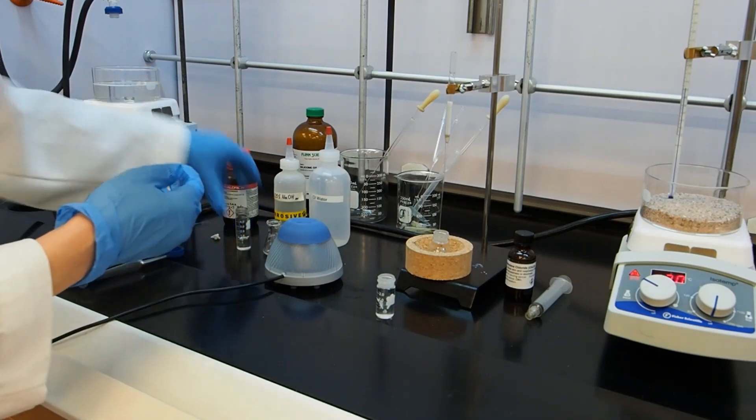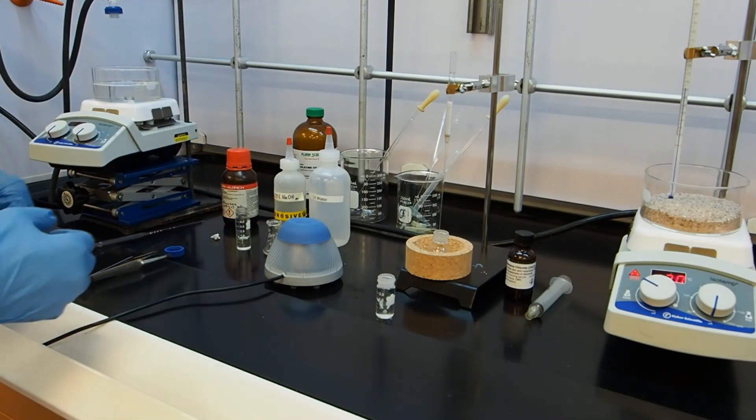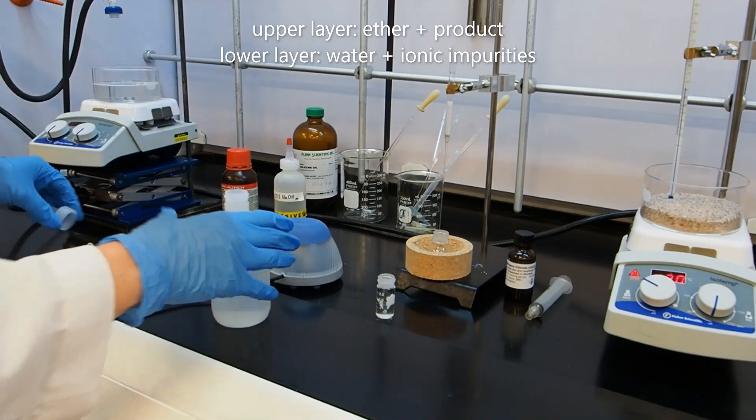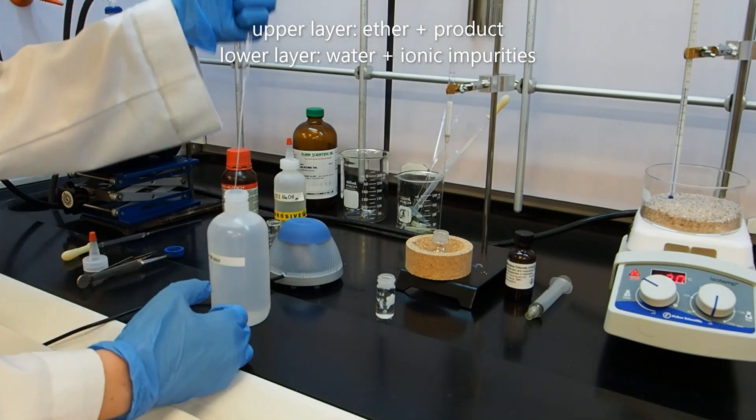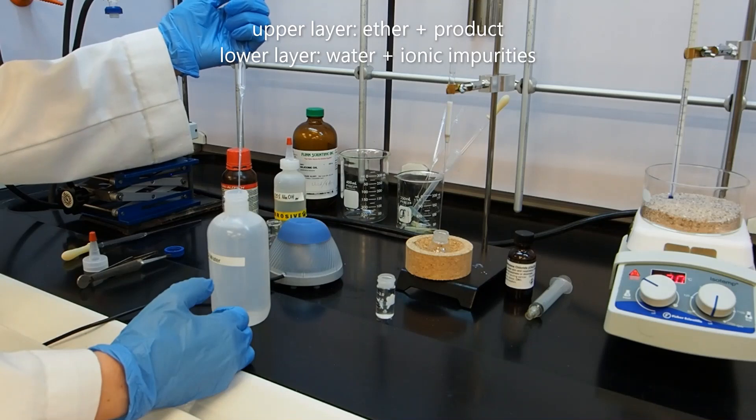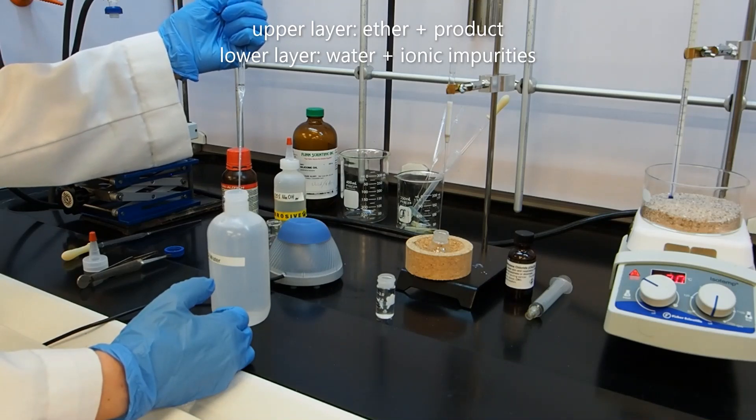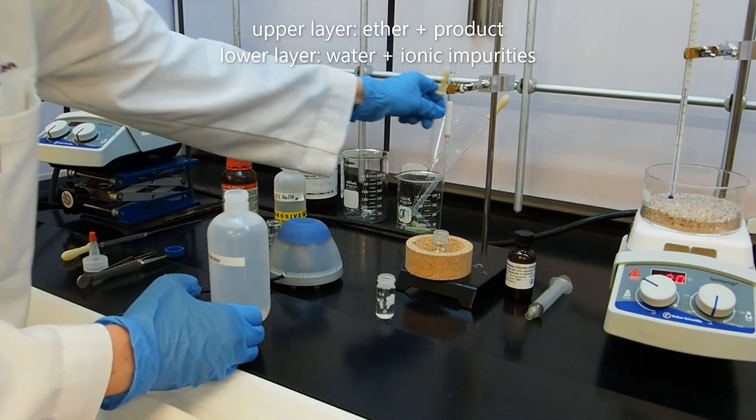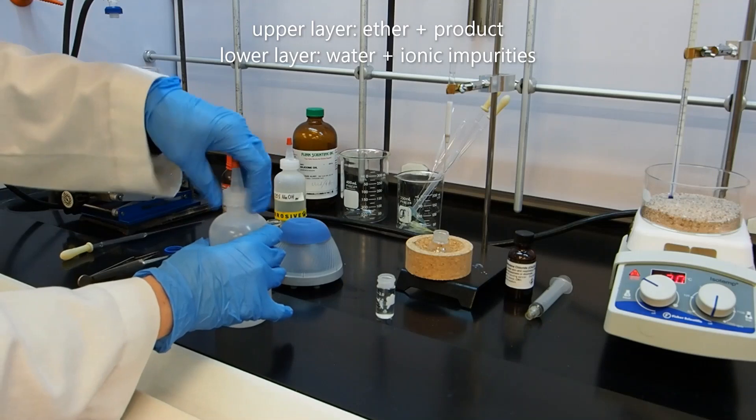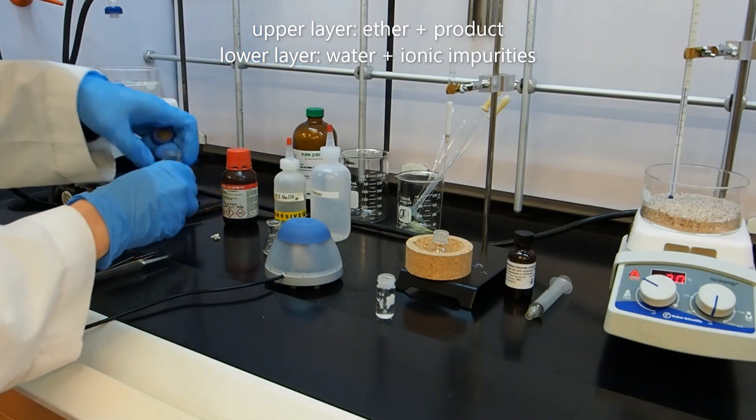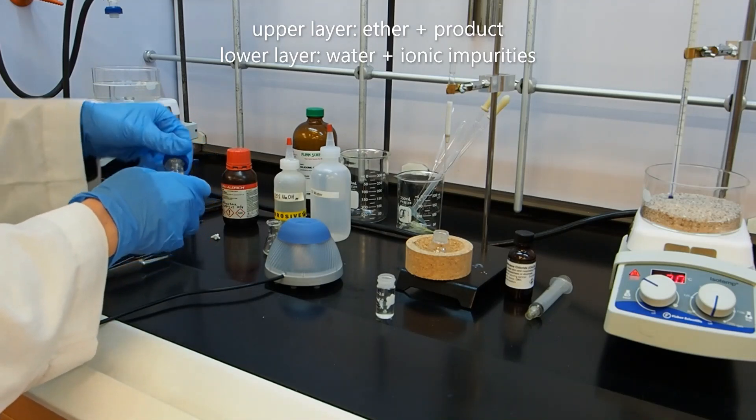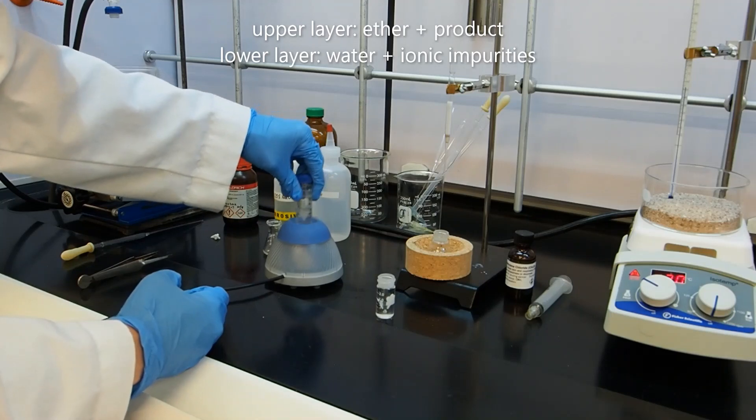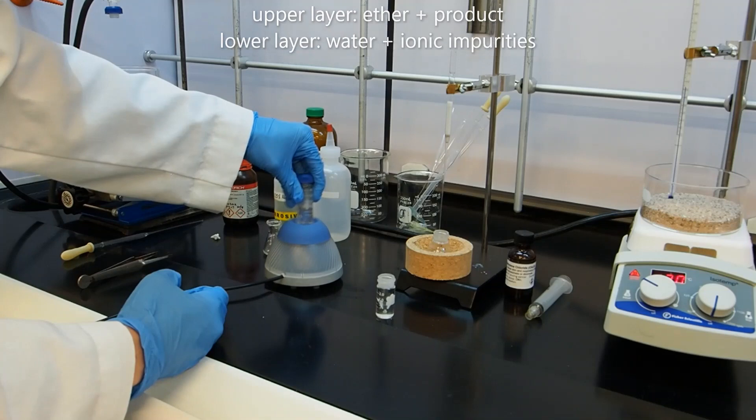The last thing we're going to do is what's called a water wash. It's just to get any remaining salt impurities out of our organic layer. We only need about 200 microliters of water. So I'm going to suck up a mil and let all but about a fifth of it out. I'm going to add that to my conical vial and do the same thing I did before where I'm going to cap and mix the two layers.